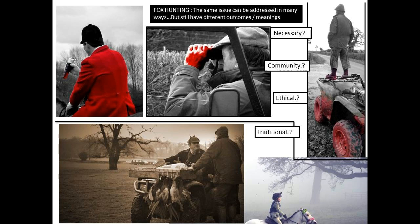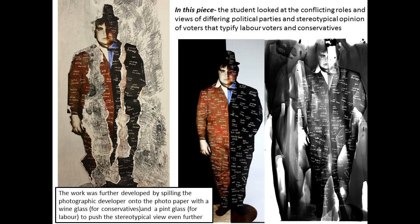From one social theme to another — this student used darkroom processes to develop images based on personas of the political parties. In one case, wine glasses were used to symbolise the conservative side with developer spilt onto the paper. The other side used something more traditional where the developer was mixed with oil and grease and put inside a pint glass instead. A little bit stereotypical, but it did the trick.